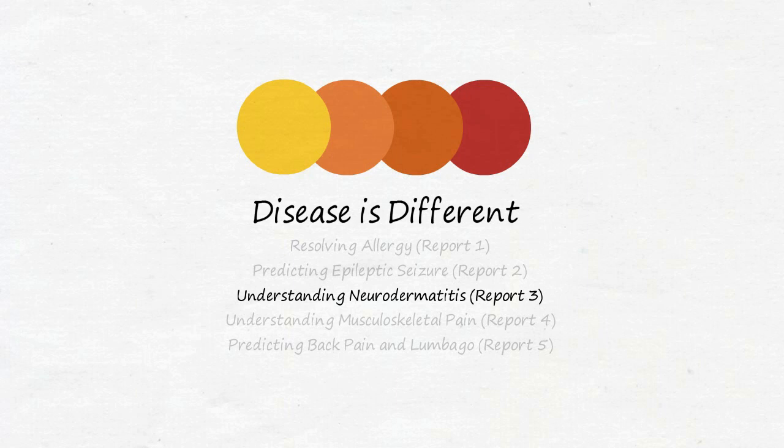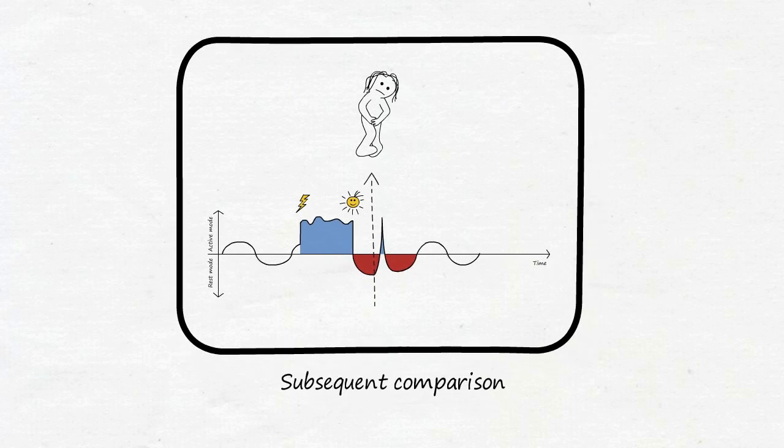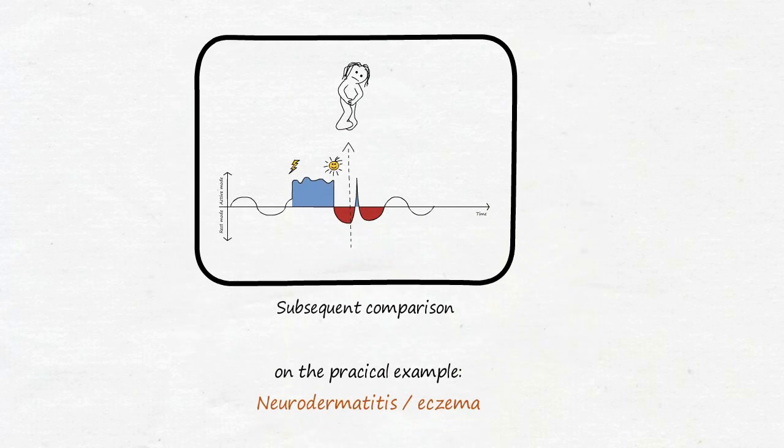In this practical part of the video series 'Disease is Different,' we look at the possibility of understanding previous illnesses in your life from a completely different causal point of view. Our real case history example: